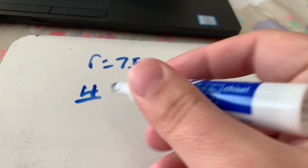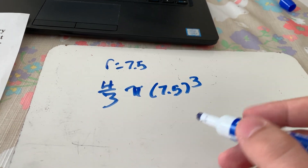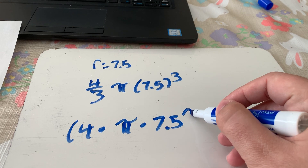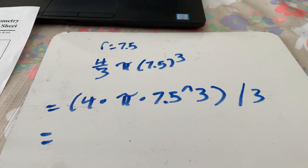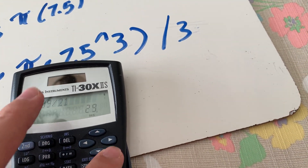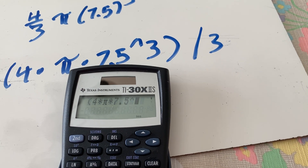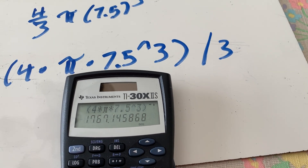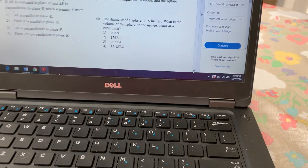So we have (4/3)π(7.5)³. In the calculator I'd punch in: 4 × π × 7.5³ ÷ 3. Let me punch that in — parentheses, 4 times π, times 7.5 to the third power, divided by 3. That gives 1767-point-something. Rounding to the nearest tenth, I round down to 1767.1, which is answer choice 2.